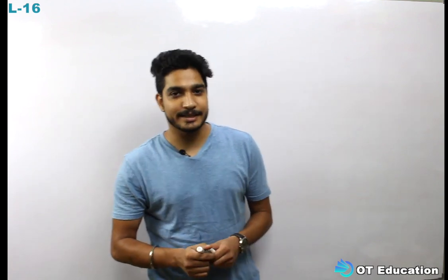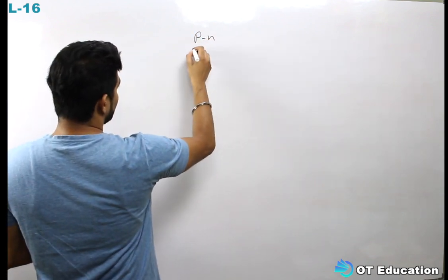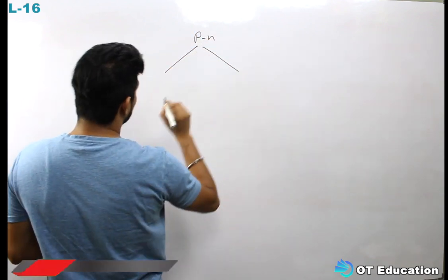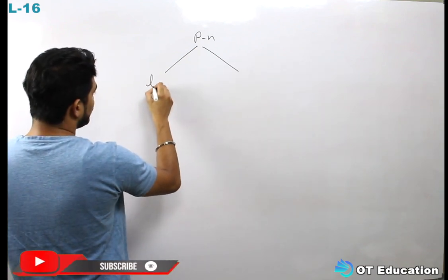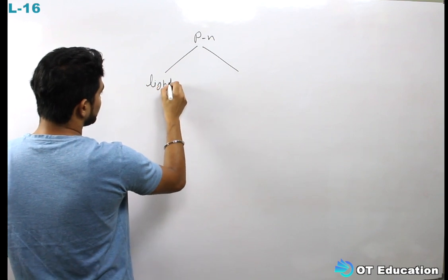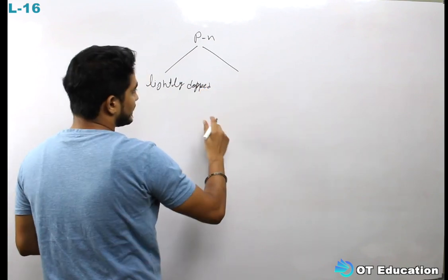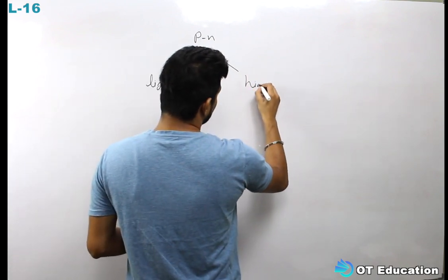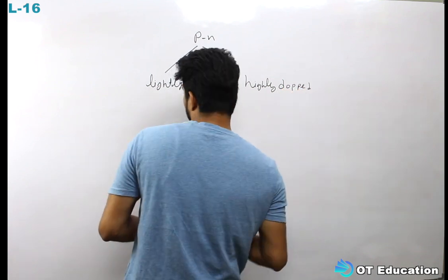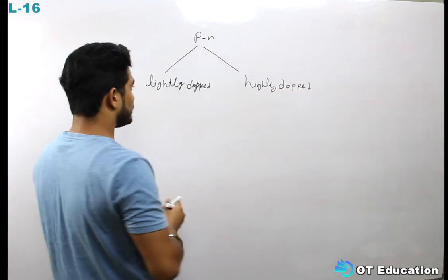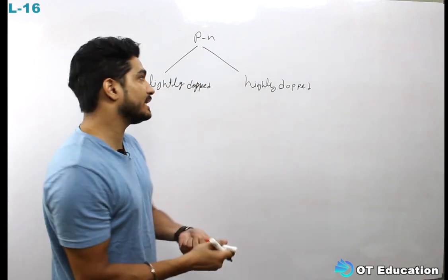So let's start. Some diodes are made from a PN junction, and we can identify the doping. One is lightly doped and the second is highly doped. What we have done in the clipper circuit uses a lightly doped diode — that means the normal diode is lightly doped.